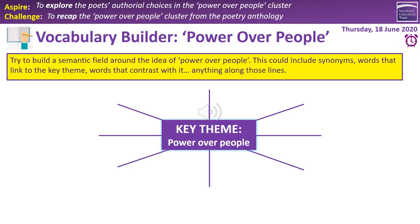We also have a vocabulary builder task — the semantic field idea, same as last time. Take the key theme, this time 'power over people', and try to build a semantic field around it. This could include synonyms, words that link to the theme, or even words that contrast with it. With power over people I might go for words like oppression, repression, suppression. Aim for eight to ten words minimum. The recipe book available through online learning has a whole bank of relevant words.